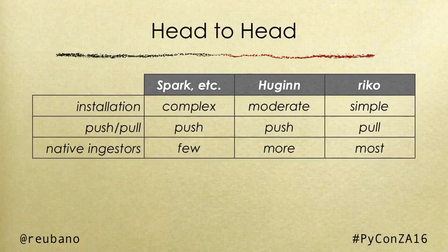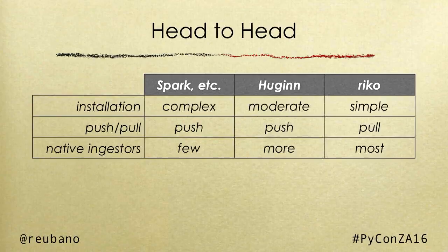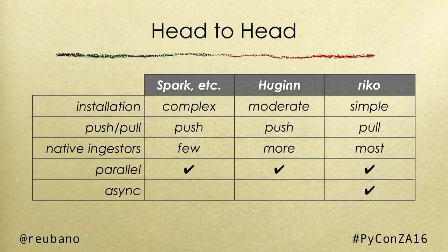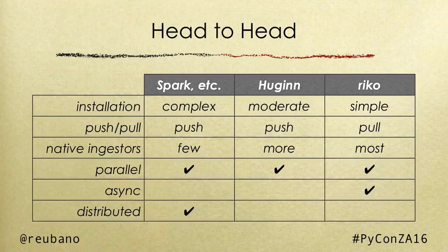Another difference is the ingestors: with Spark and the others, they're usually just focused on text and JSON. QIN adds RSS. When you look at Rico, it has even more ingestors — it's able to parse HTML and XML as well. Looking at parallel, all of them are able to run in parallel mode. But as far as async, from what I've looked at, neither Spark nor Storm nor QIN have an async API. Finally, distributed: Rico is meant to run on the same machine without a cluster. Whereas Spark, Storm, et cetera, are designed for being distributed and running on multiple machines.